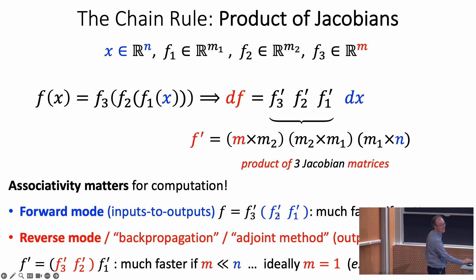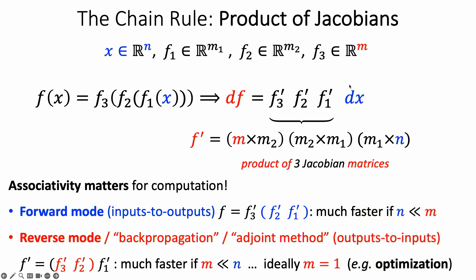There are two famous orders. Forward mode puts parentheses from inputs to outputs — efficient when n is small, say n = 1 (one input, many outputs). Reverse mode goes the other direction, right to left — efficient when the number of outputs is small. The ideal case is m = 1: one scalar output from many inputs, as in optimization. In reverse mode you always want to multiply a row vector by a matrix, getting another row vector — you always multiply small things by large things, never large by large.